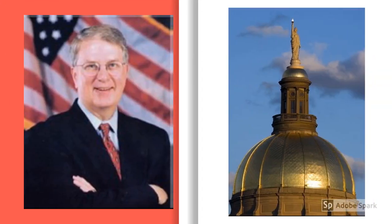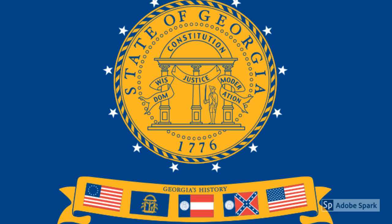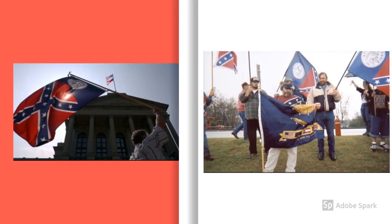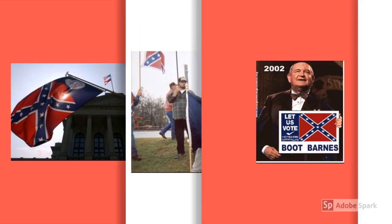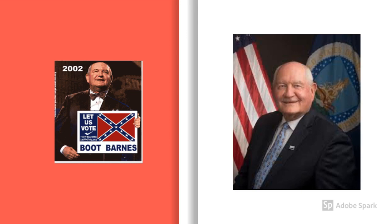Finally, Governor Roy Barnes attempted to put the issue of the 1956 flag to rest. Before coalitions could be organized to slow or stop the change of the flag, Barnes encouraged the legislature to pass House Bill 16. After it was passed and the new flag design was revealed, supporters of the 1956 flag were livid, with some calling the new flag the Barnes Rag. This led to the upset victory of Sonny Perdue over Barnes in 2002. By 2004, citizens of Georgia voted to choose the current state flag over the Barnes flag.